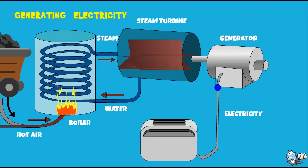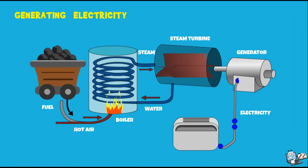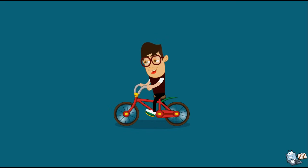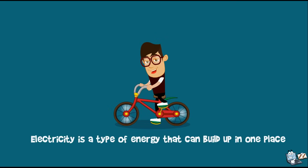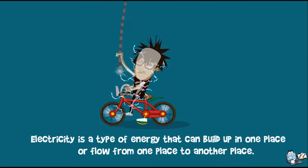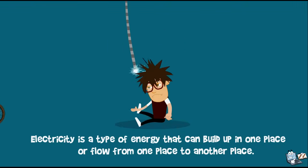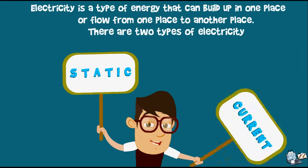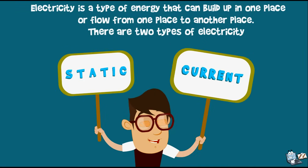We see uses of this electricity in our homes and schools. Now let's remember the definition of electricity. Electricity is a type of energy that can build up in one place or flow from one place to another. There are two types of electricity: static and current. Let's study about these one by one.